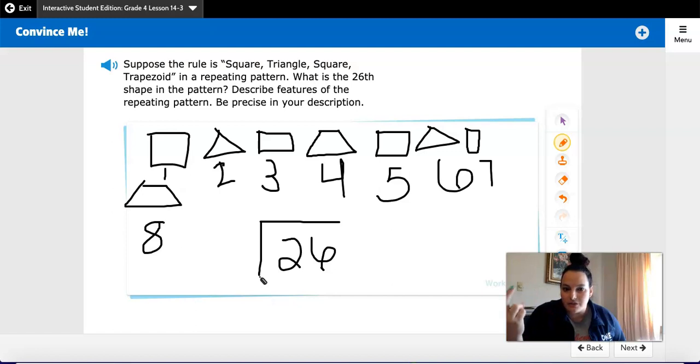Since there's square, triangle, square, trapezoid, I know there are 4 shapes. So 26 divided by 4 is going to give me 6 because 6 times 4 is 24 with a remainder of 2.